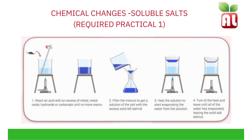Making soluble salts — required practical. Soluble means your salt dissolves in solution, in water. Therefore, the salt that is formed will always have to be removed from the water by the process of evaporation. The steps involved in making a soluble salt involve reacting an acid with an excess of base — that base may be a metal, a metal oxide, or a metal carbonate — until no more base reacts. An example is forming copper sulfate crystals from sulfuric acid and copper oxide as your base. Add excess copper oxide with a spatula to sulfuric acid in a beaker until no more dissolves.